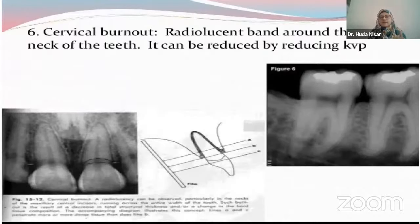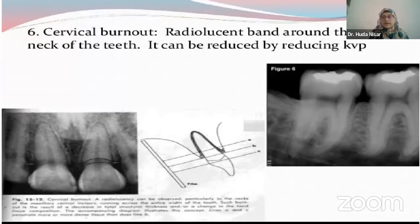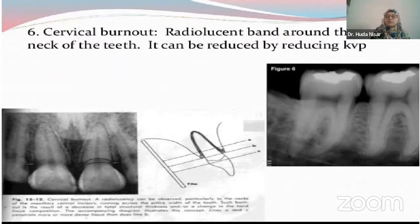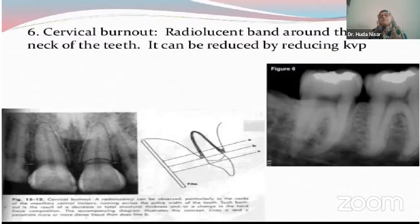Then we have cervical burnout. Cervical burnout occurs because the areas above and below the cervical area absorb more of the x-rays and thus appear more radiopaque than the cervical area. This is especially apparent when a crown has been given to the patient — sometimes when you take an OPG, you will see a cervical radiolucency below the crown, which will be very apparent. You might misinterpret that the tooth is infected, but when you do an intervention you will find the tooth is perfectly healthy. This phenomenon is basically observed in a vital tooth that has been given a crown or a bridge.